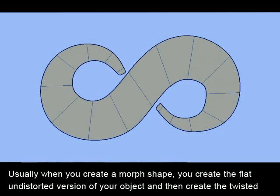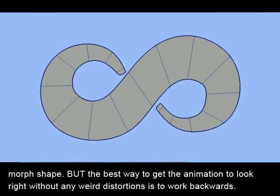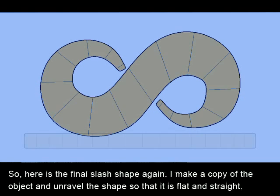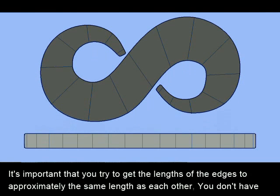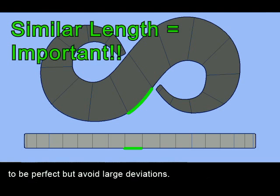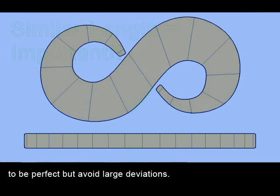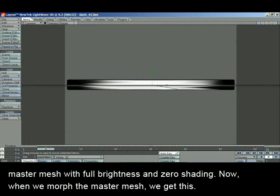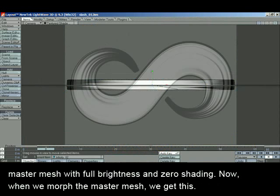Usually when you create a morph shape, you create the flat undistorted version of your object and then create the twisted morph shape. But the best way to get the animation to look right without any weird distortions is to work backwards. So here's the final slash shape again. I make a copy of the object and unravel the shape so that it is flat and straight. It's important that you try to get the lengths of the edges to approximately the same length as each other — you don't have to be perfect, but avoid large deviations. The straight mesh will be the master object and the twisted mesh will be the morph object. The texture is applied to the master mesh with full brightness and zero shading. Now, when we morph the master mesh, we get this.